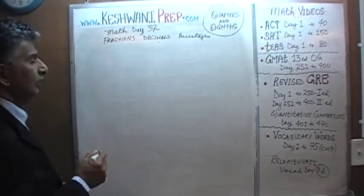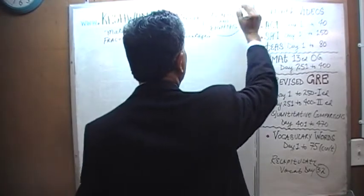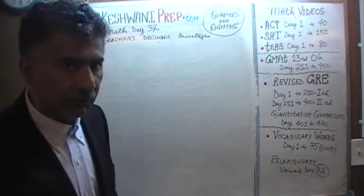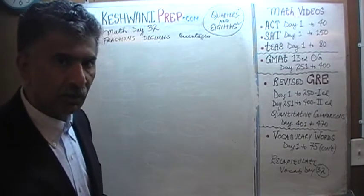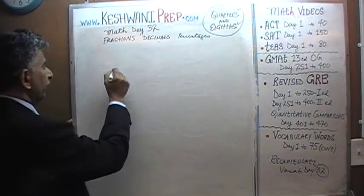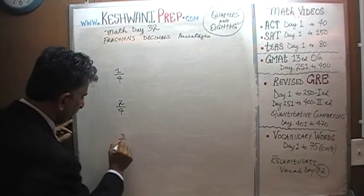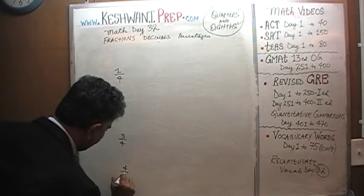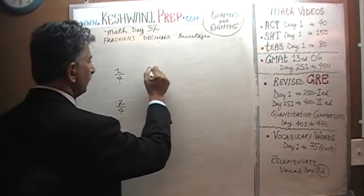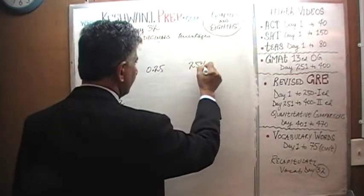We want to learn all the eighths. Learning the eighths and learning the quarters is one and the same — there is no difference between the two. Everybody knows the quarters, so let's begin our story with them. One quarter is 0.25, which is 25 percent. A quarter of something is 25 percent.